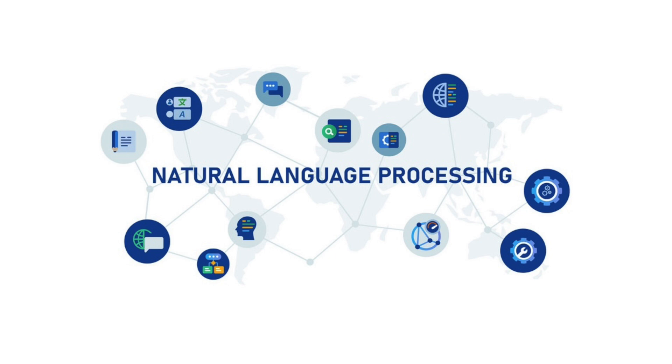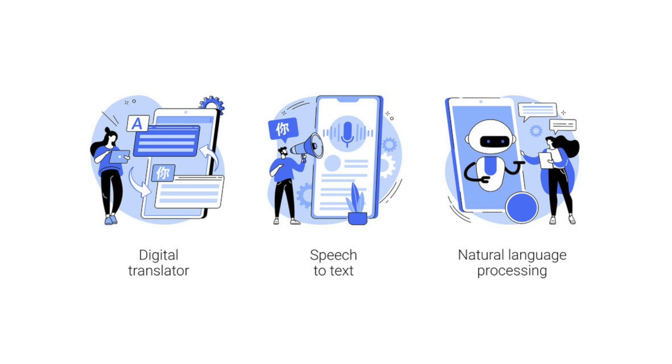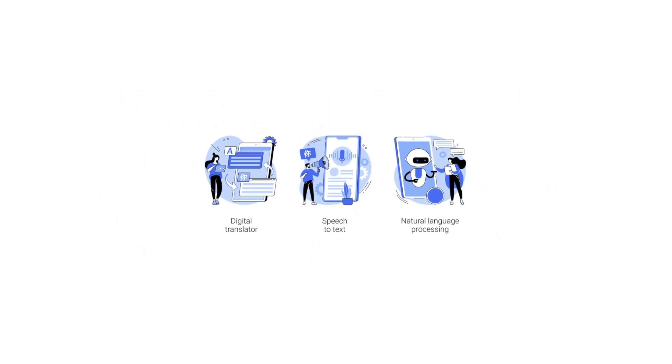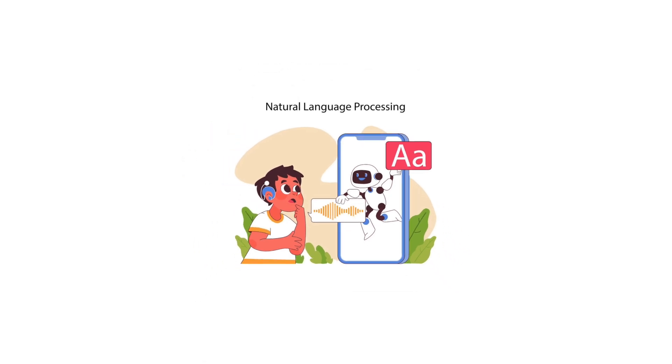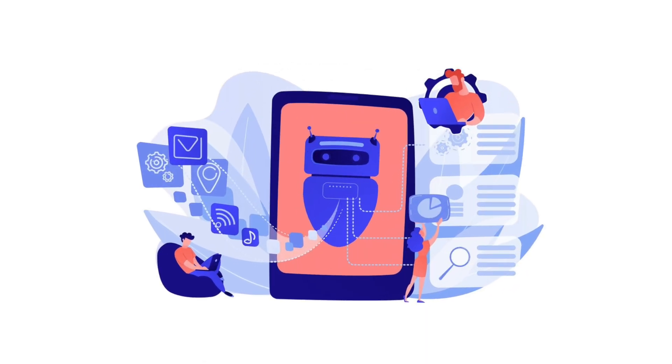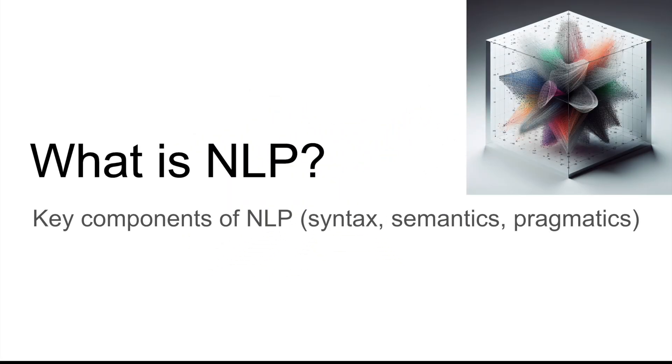Well, NLP or natural language processing is a branch of artificial intelligence that focuses on the interactions between computers and humans through natural language. The goal of NLP is to enable computers to understand, interpret, and generate human language in a very valuable way. It involves several components including syntax, semantics, and pragmatics.